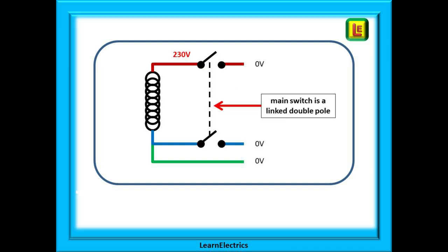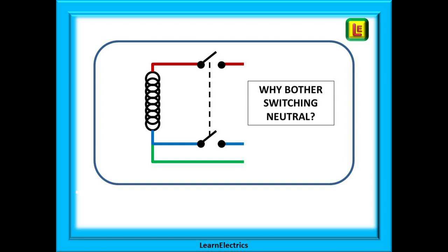This means that if you turn the main switch off in the consumer unit, one half of the main switch is still energized. Most main switches are double pole. They are linked together so that they switch off both live and neutral at the same time, and this is a requirement in all domestic properties. But why bother switching neutral if it is zero volts?